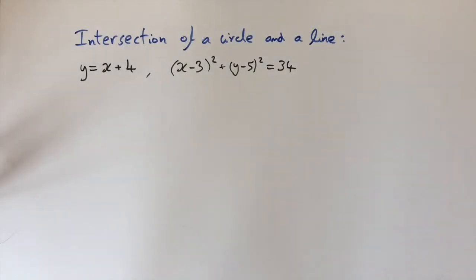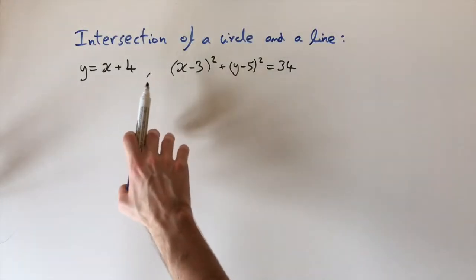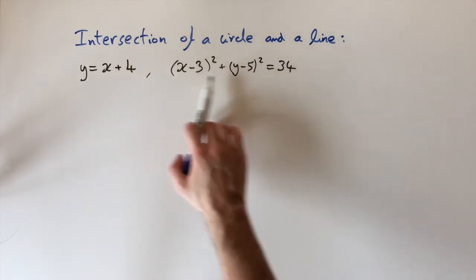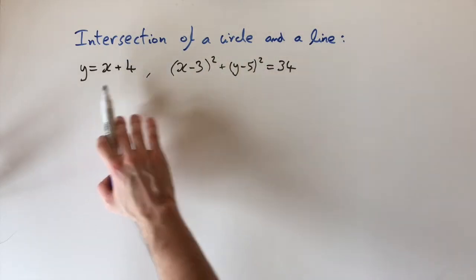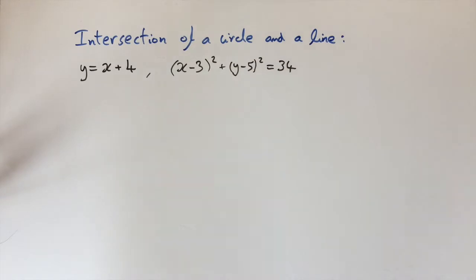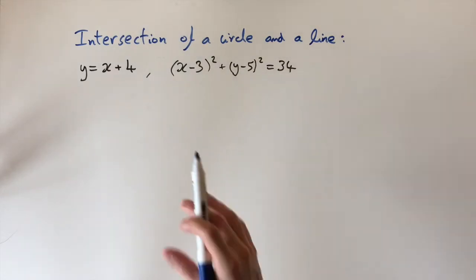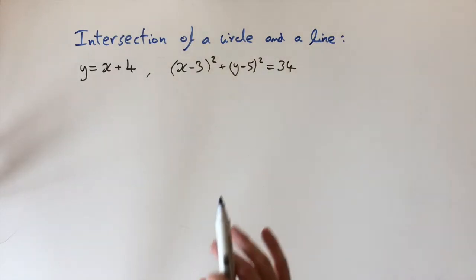Today we're going to be looking at solving equations that correspond to an intersection of a line and a circle. So we have an equation of a line and an equation of a circle. Now before we get into the algebra, let's just think about what this could mean geometrically.